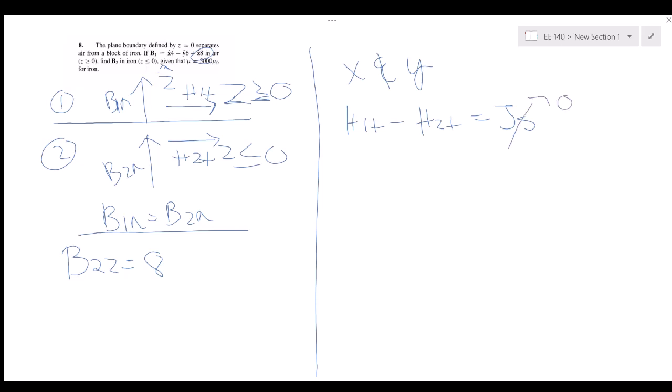And so that just becomes h1t equals h2t, which is just b1t over mu naught and then b2t over 5000 mu naught, which was stated in the problem.